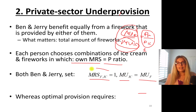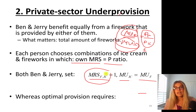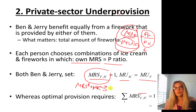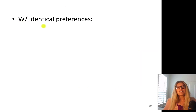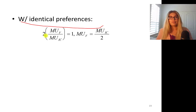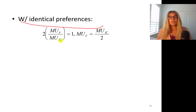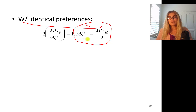The socially optimal level requires adding their preferences together. The sigma means add over Ben and Jerry. So, the socially optimal condition is: MRS of Ben plus MRS of Jerry equals 1. With identical preferences, that is two times the marginal rate of substitution equals 1. So, two times marginal utility of fireworks divided by marginal utility of ice cream equals 1. The optimal level requires that they consume fireworks and ice cream such that the marginal utility of fireworks equals half the marginal utility of ice cream.